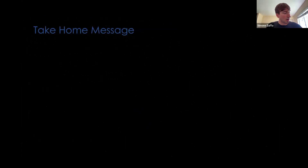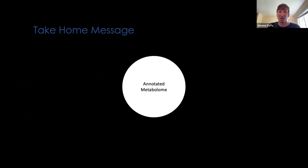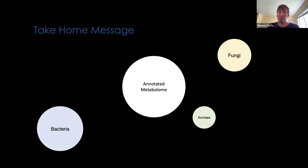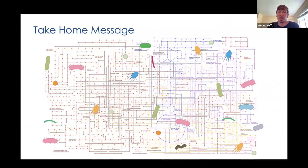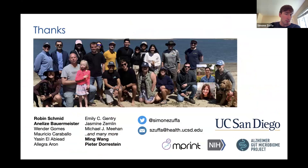As a take-home message: the untargeted metabolomics world is dark and scary. Hopefully we are able to shine a light on it through standards and annotated metabolites, and with MicroMAST we can also point to whether known molecules of interest are coming from bacteria, fungi, or archaea — and possibly associate those molecules to their respective producers. This will hopefully help you design more mechanistic studies to validate your findings. It takes a village to do this — I want to acknowledge the two main first authors of the paper, also Robin and Annalise for their idea and work, and Ming and Peter for their support, and everyone else in the lab.